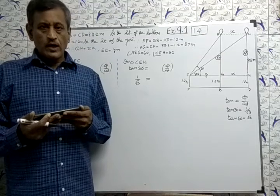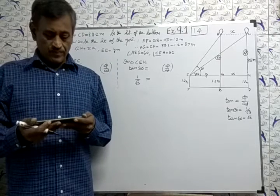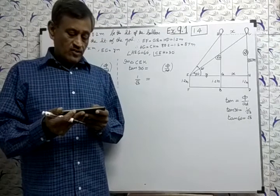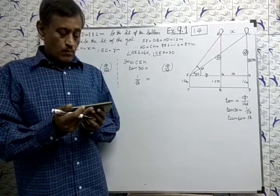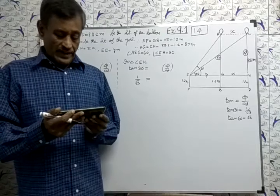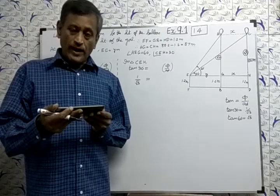Exercise 9.1 Question number 14. A 1.2 meter tall girl spots a balloon moving with the wind in a horizontal line at a height of 88.2 meters.